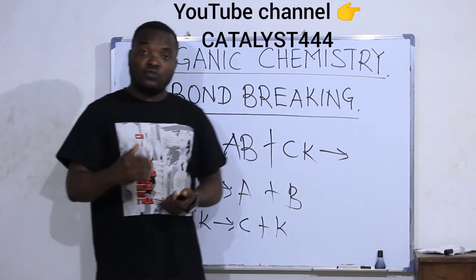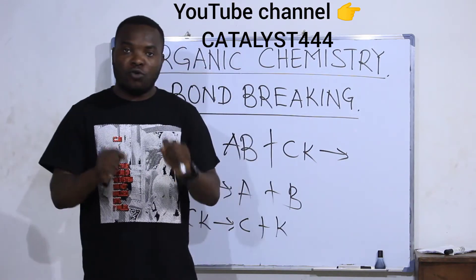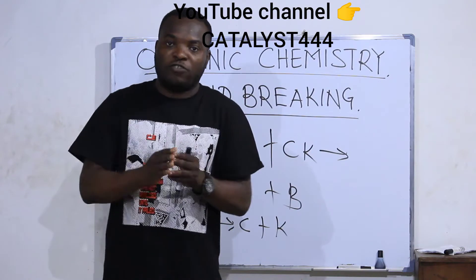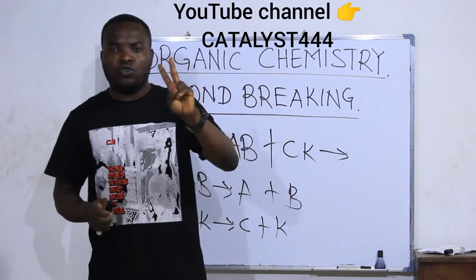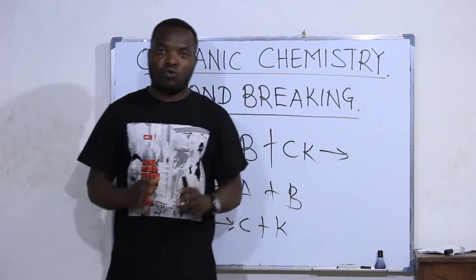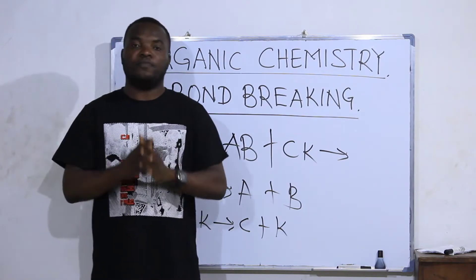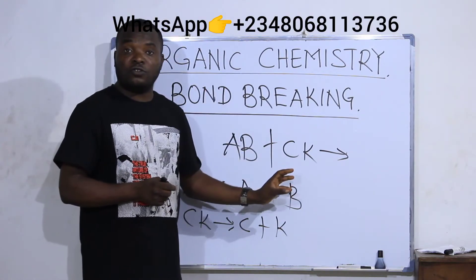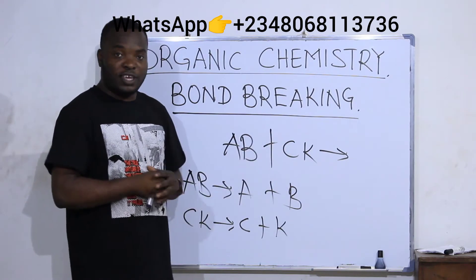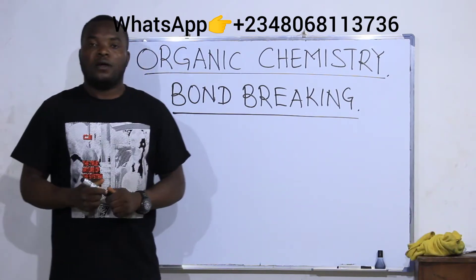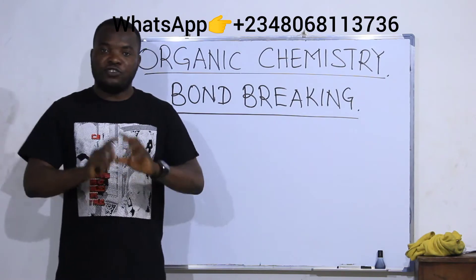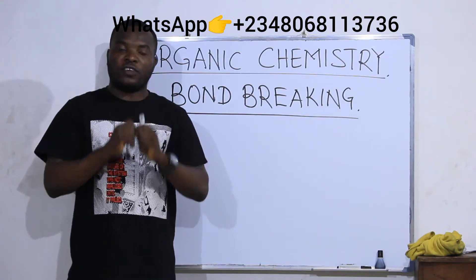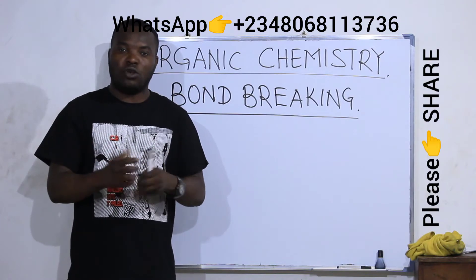What I'm trying to say is: before a chemical reaction takes place, the bond between the reactants must be broken. And there are two ways bonds are broken in chemistry generally. Those two ways are the sections we are going to look into in this class. In chemistry generally, there are two ways chemical bonds are broken.